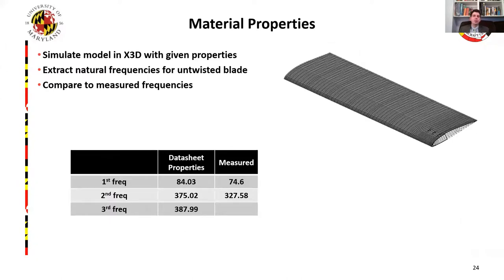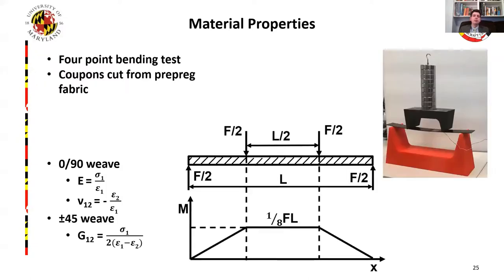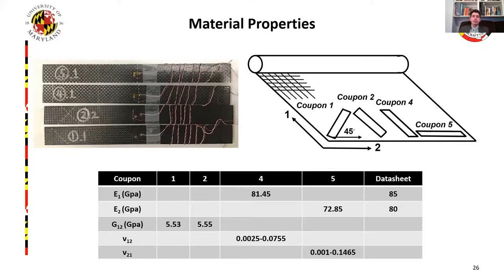However, the model is only as accurate as the material properties applied to it. Using the datasheet properties of the provided carbon fiber fabric, the model clamped frequencies were compared to the measured frequencies of the blade. The datasheet properties greatly over-predict the frequencies, indicating the fabricated blade is less stiff than the datasheet would suggest. Since composite material properties can vary depending on the fabrication process, we performed a series of coupon tests to determine the correct properties. This was done using a four-point bending test of coupons from the same prepreg fabric in different orientations, creating an area of constant bending moment where strain gauges measure the resulting strain to back out each material property. Each test allowed for measurement of the longitudinal and lateral Young's modulus, the shear modulus, and the Poisson's ratio. We find that the Young's modulus is measured to be lower than the datasheet value.